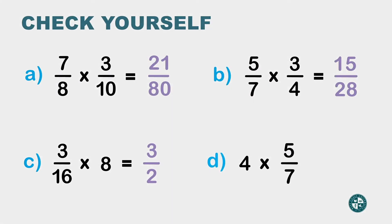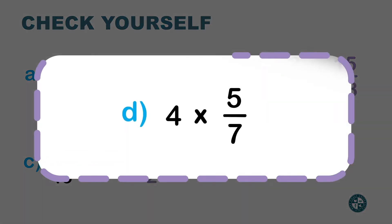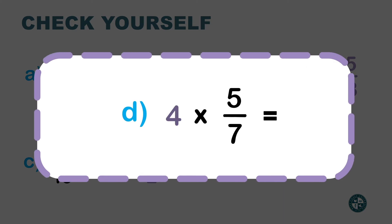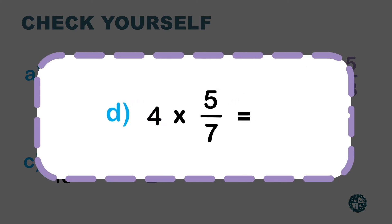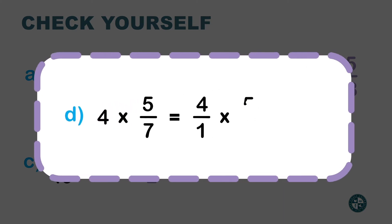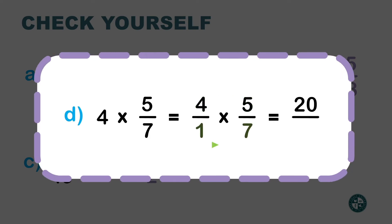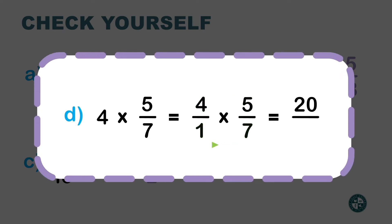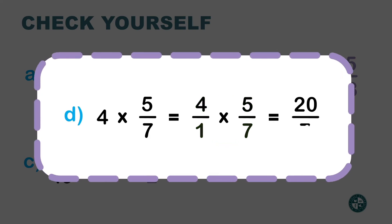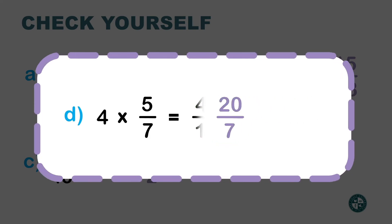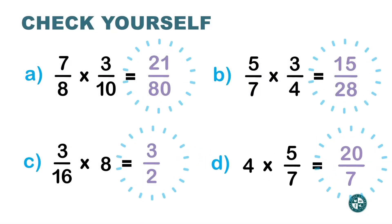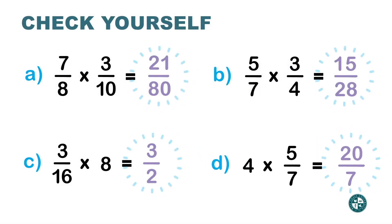Let's do the last one: 4 is a whole number, so we rewrite it as 4 over 1. 4 times 5 is 20, and 1 times 7 is 7. If you notice in all of these exercises, at the end I was always checking if I can simplify my answer.